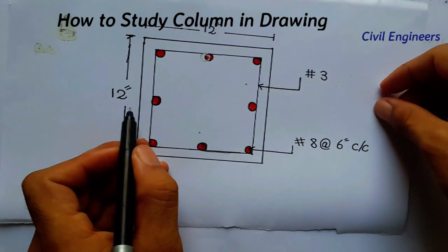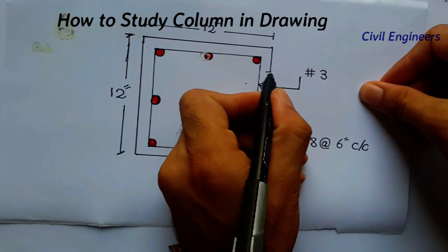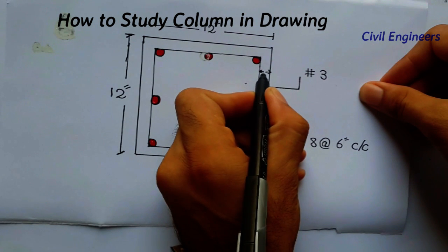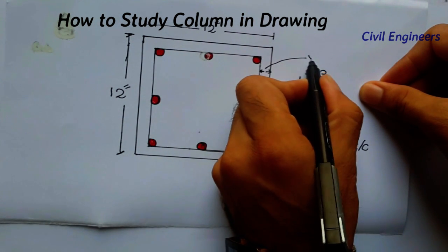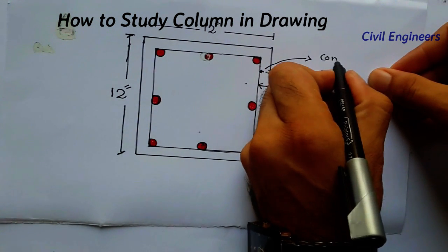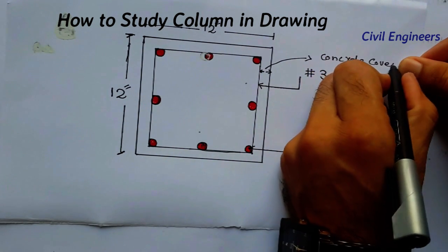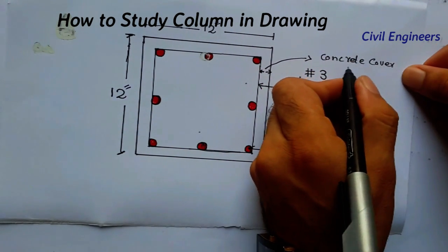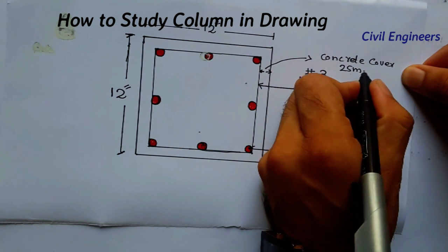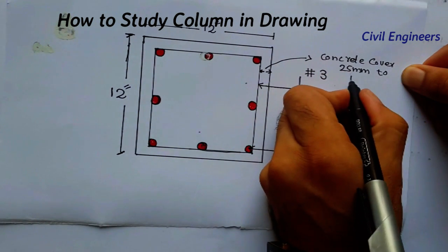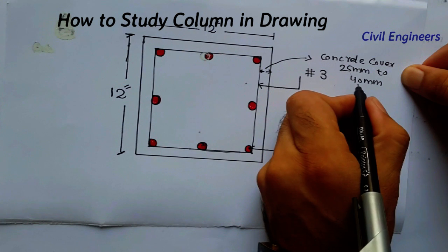I will tell you what this space is called — this is called concrete cover. For a column, the concrete cover ranges from 25 mm to 40 mm. A concrete cover of 40 mm is much better for the column.